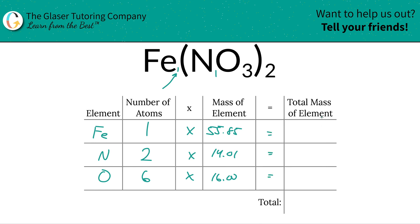Then we're going to find the total mass of each element in the compound, and all we have to simply do is just multiply the row across. So the total mass of iron here is going to be 55.85. Easy peasy. Total mass of nitrogen here is going to be 28.02. And the total mass of oxygen there is going to be 96.